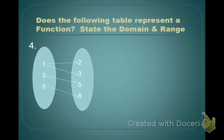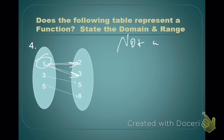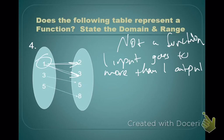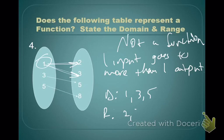A Venn diagram like this shows a relation. Is this relation a function? As you see here, this 1 is getting mapped to both 2 and 3, and that can't happen. We have to know exactly what we get when we put an input in. So this is not a function, because one input goes to more than one output. Domain is 1, 3, 5. Your range is the other Venn diagram: 2, 3, 5, 8.